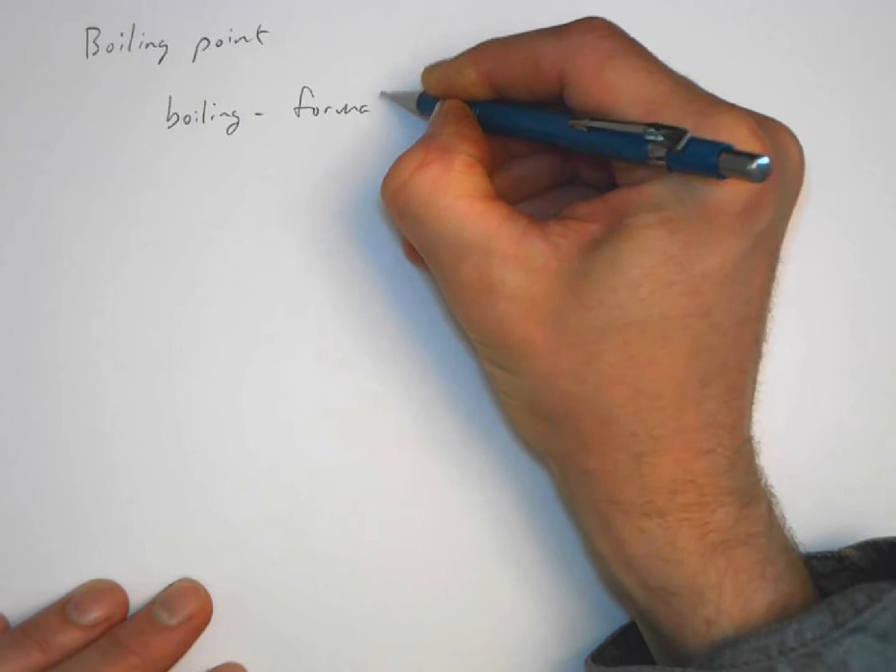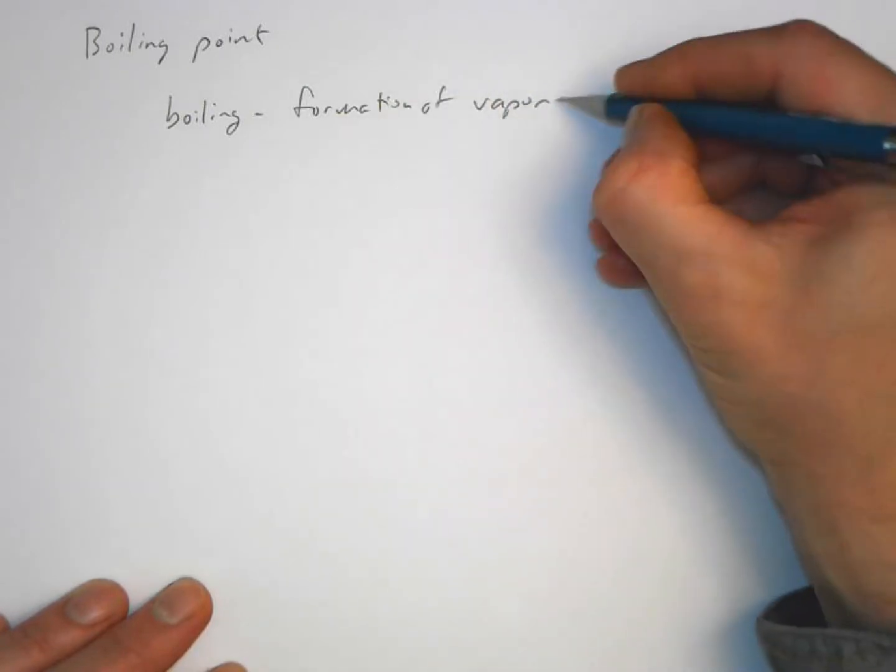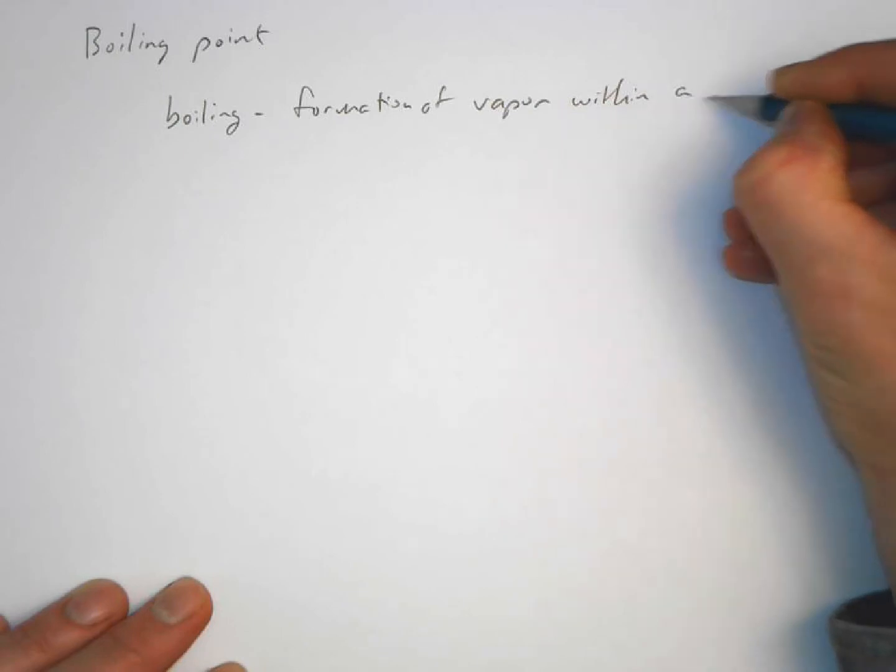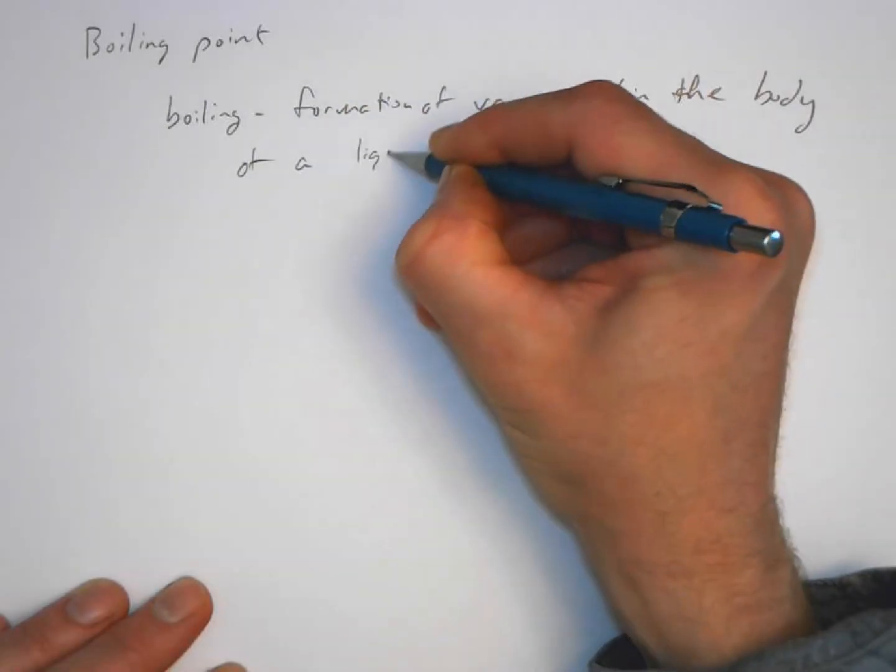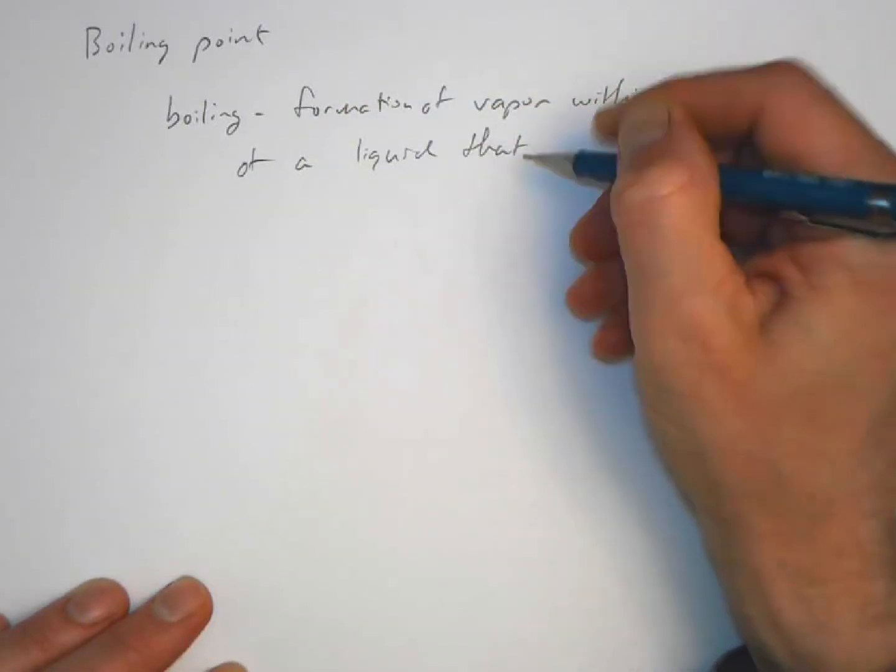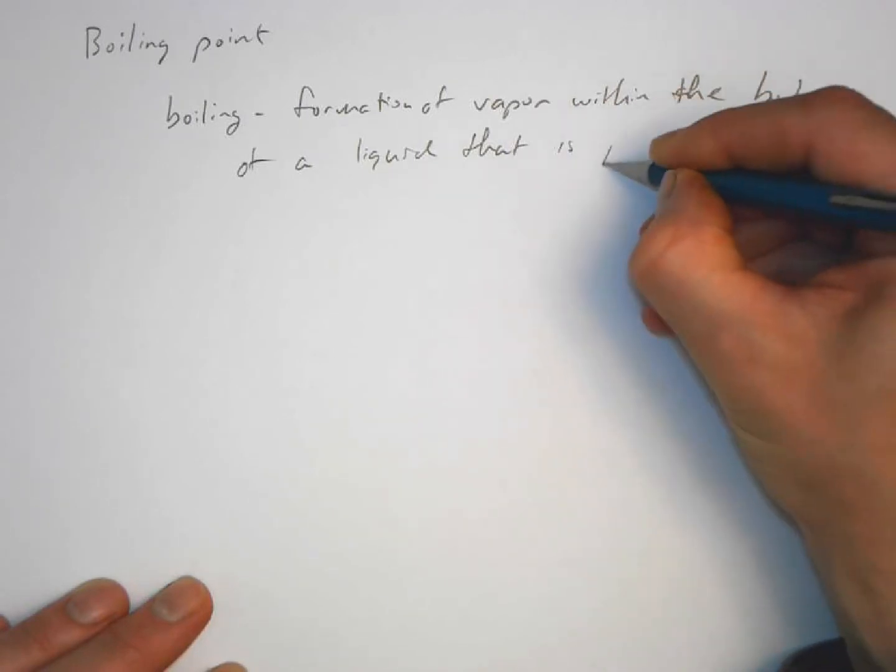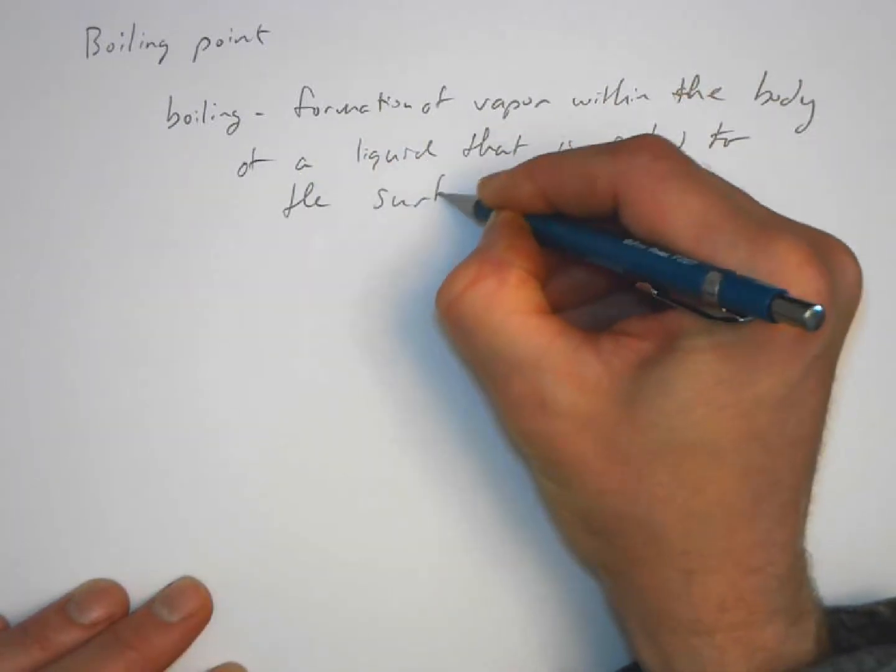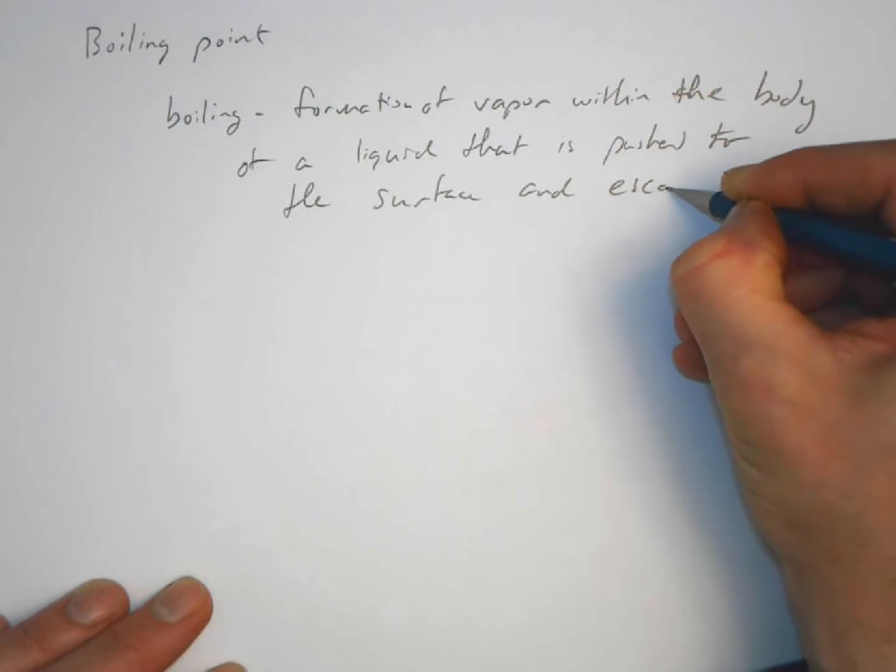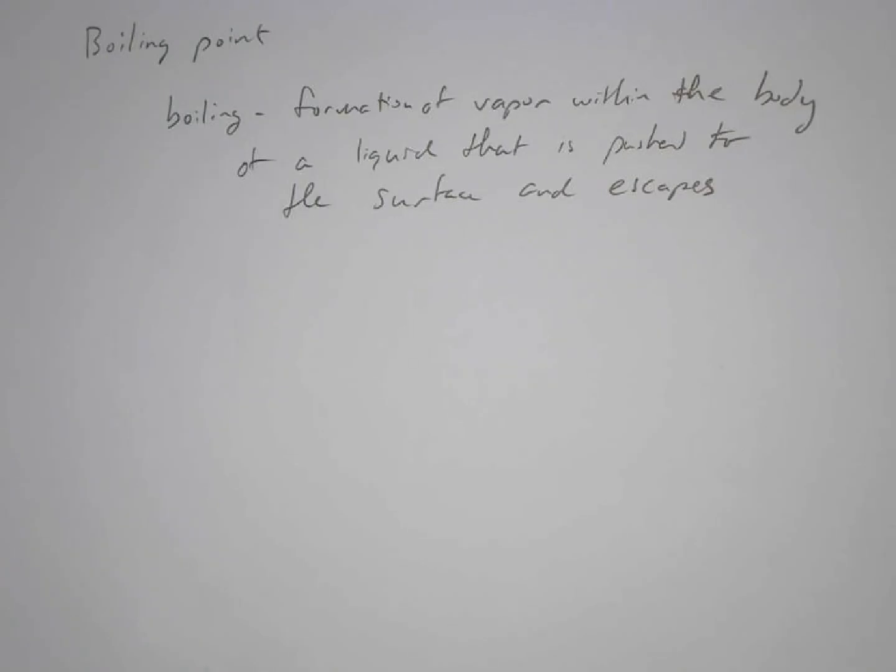It's the formation of a vapor within the body of a liquid that is pushed to the surface and escapes. So in other words, what's happening is you're essentially forming a packet of gas within the liquid because those particular molecules of that liquid had enough energy to become a gas, and since the gas is less dense than the liquid, it would bubble up and escape.